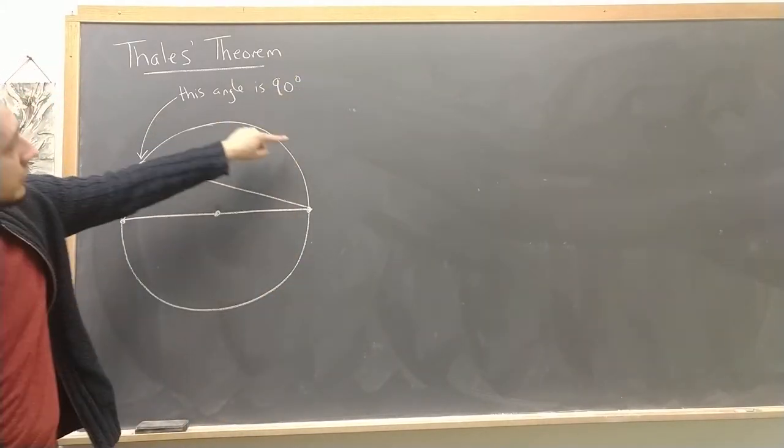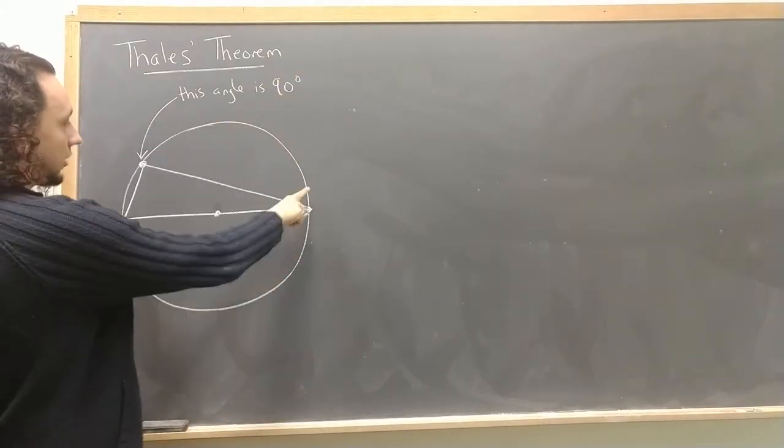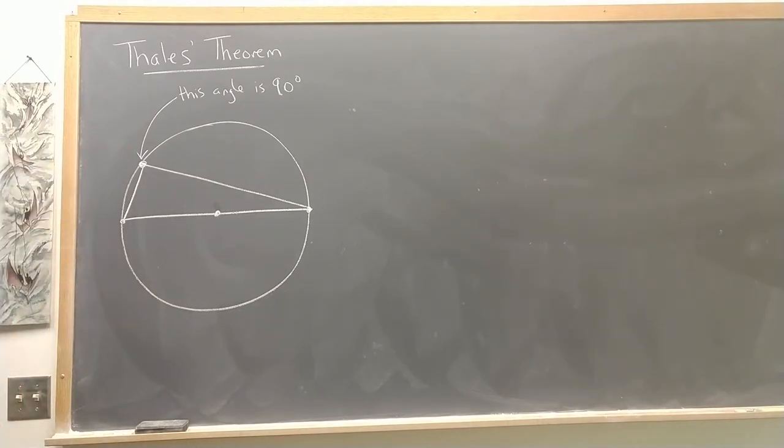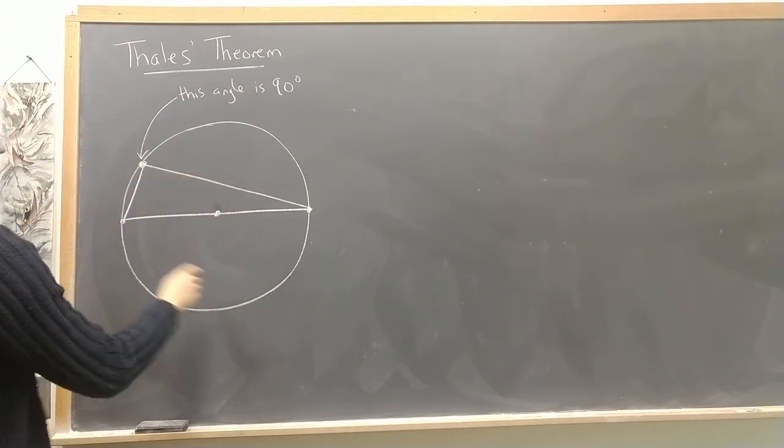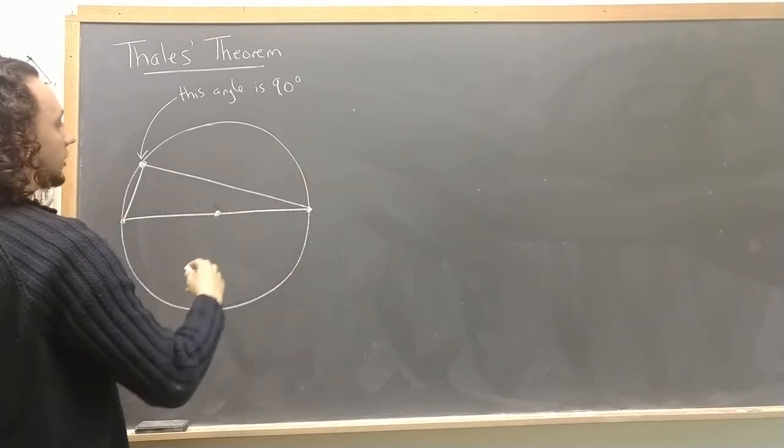In other words, no matter where I choose to put a point on the circle and make a triangle, I'm getting a right angle triangle. That's the content of Thales' Theorem. Of course you have to choose a point other than these two points to actually get a triangle.